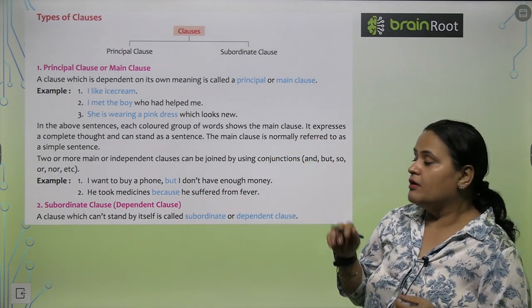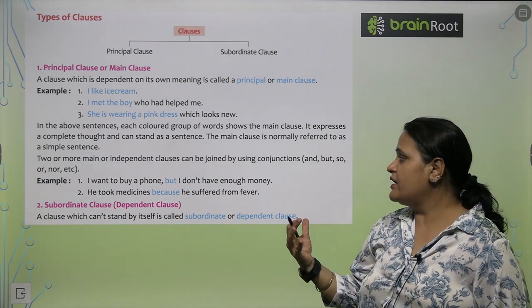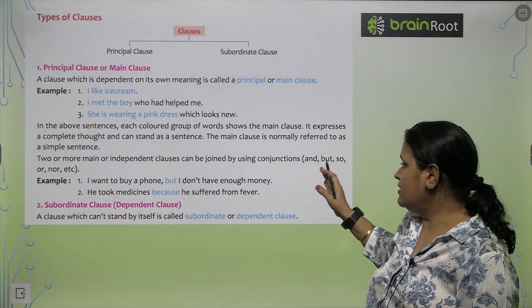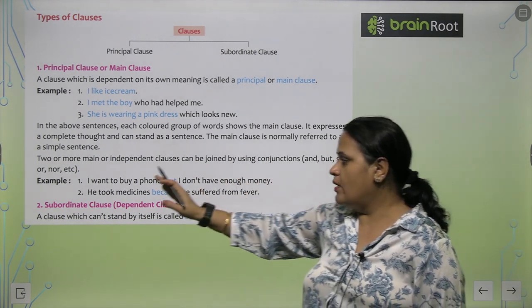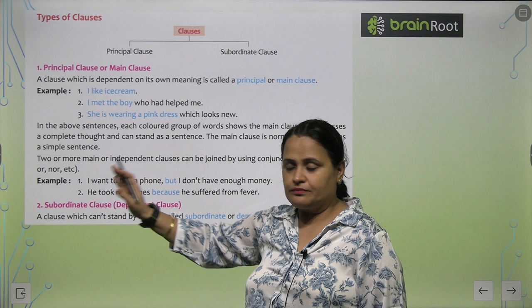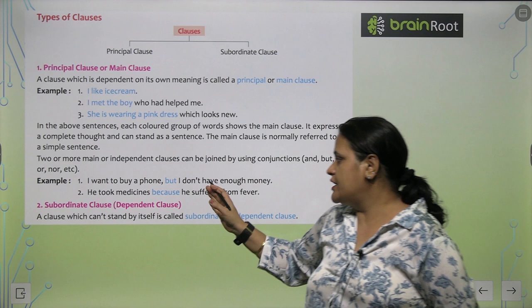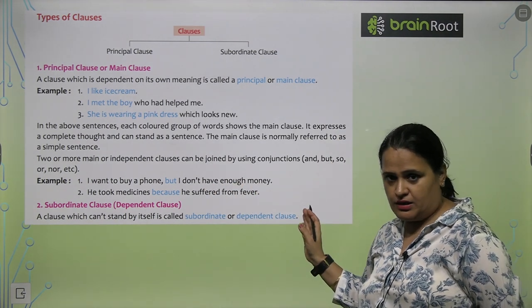Two or more main or independent clauses can be joined by using conjunctions: and, but, so, or, not, etc. Jaisi ke,